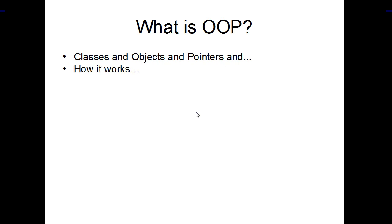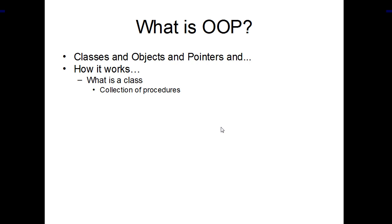How does it work? Well, first, we're going to compare the concept of object-oriented programming with what you already know. A class is basically like a collection of procedures. You all know a collection of procedures. When you start a WinDev project, for example, you have the automatically created global collection of procedures. So you can create another one and in there you can put as many procedures as you want, and you can organize them by putting them in several collections of procedures, one for each purpose.